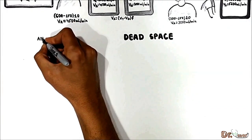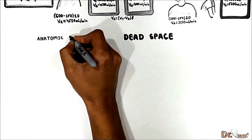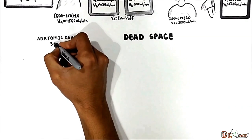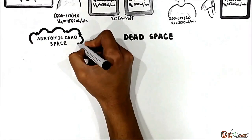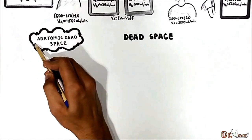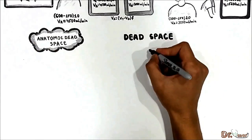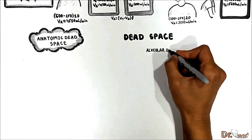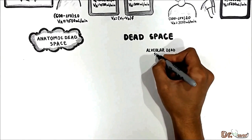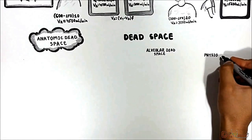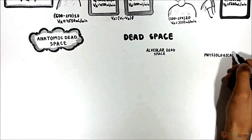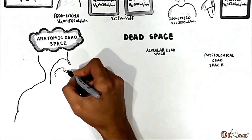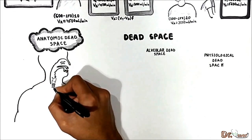The most important dead space for our purposes is the anatomic dead space. In addition to anatomic dead space, you also have to know about alveolar dead space and physiological dead space. First, let's talk about anatomic dead space.